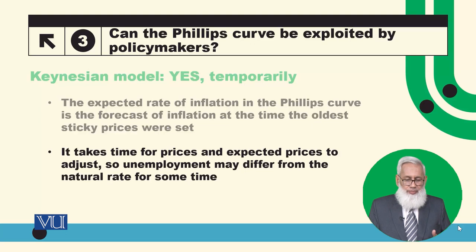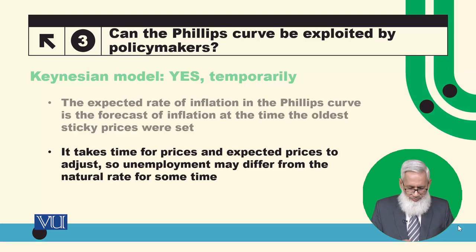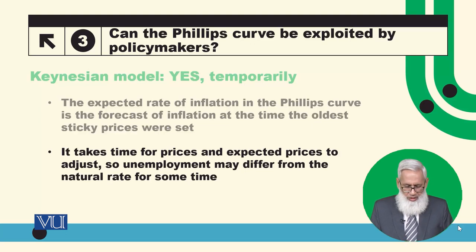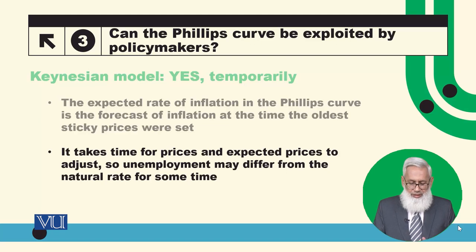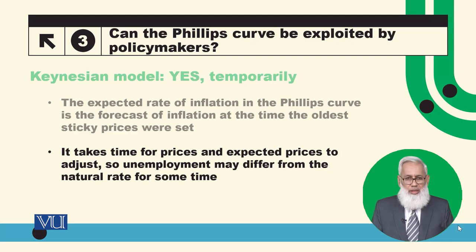Because prices slowly adjust in the Keynesian model, the short run will be important. Prices slowly adjust and expectations adjust accordingly, which is why the temporary transitional period will be affected by unemployment.